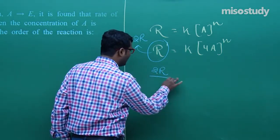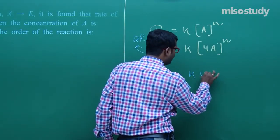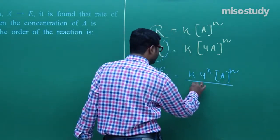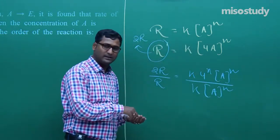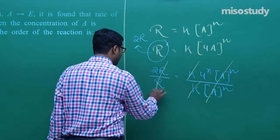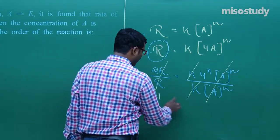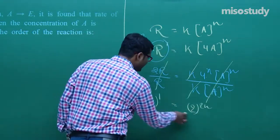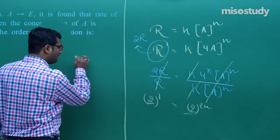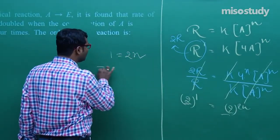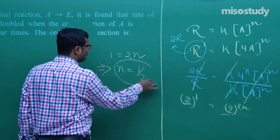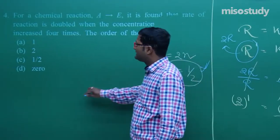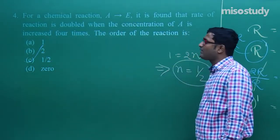Dividing both equations: 2R/R = K·(4A)ᴺ / K·[A]ᴺ. The K and [A]ᴺ terms cancel. So 2¹ = 4ᴺ, which we write as 2¹ = 2^(2N). Since bases are the same, powers are equal: 1 = 2N, so N = 1/2. For this reaction, option C is correct — the reaction is of half order.